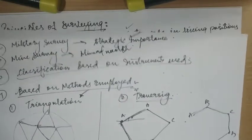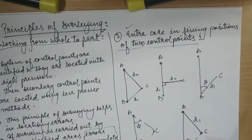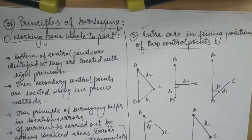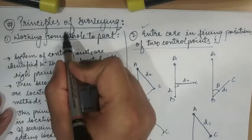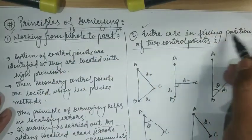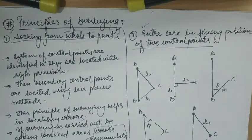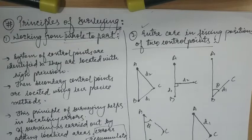Now we will move to an important topic: the principles of surveying. There are only two principles of surveying. First is working from whole to part. Second is extra care in fixing positions of two control points. While surveying large areas, a system of control points is identified and located with high precision. Then secondary control points are located using less precise methods, and details of localized areas are measured and plotted with respect to secondary control points. This is called working from whole to part.